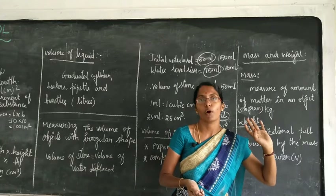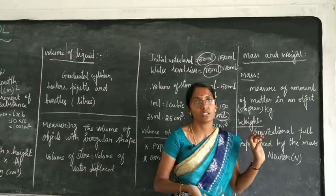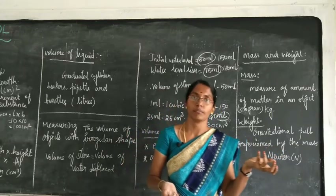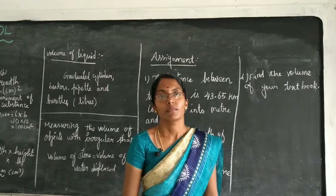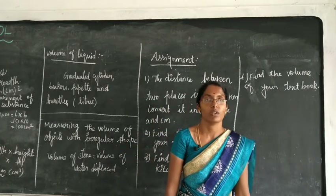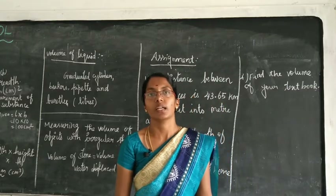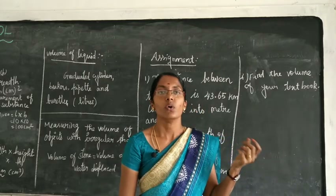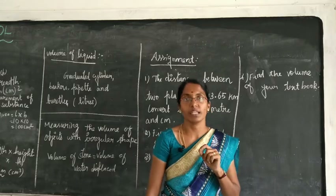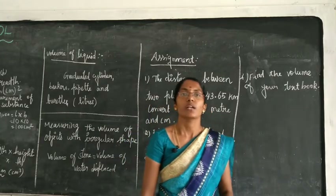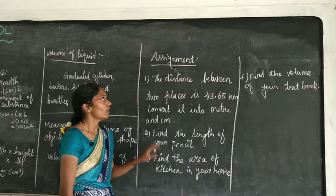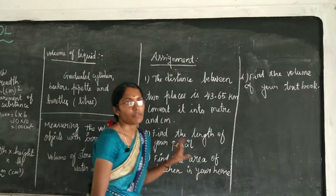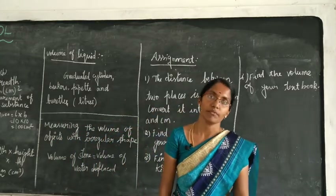Mass is measured with a beam balance and weight is measured with an electronic balance. Types of clocks include analog clock, digital clock, and sand clock — sand clock was used in olden days. 60 seconds make 1 minute and 60 minutes make 1 hour. There is an assignment with 4 questions to complete. We will wind up this session by watching a video. Thank you, students.